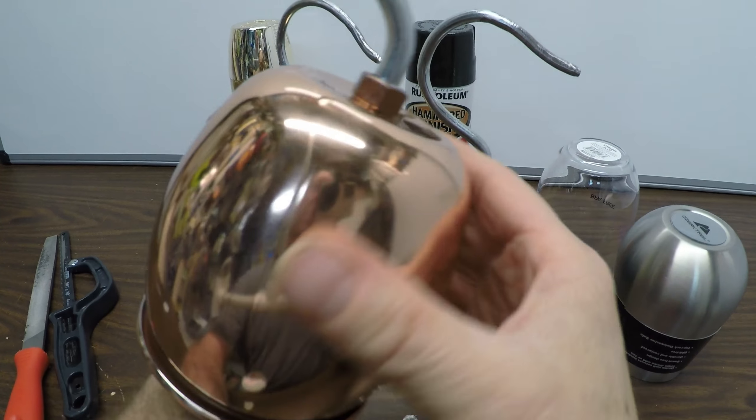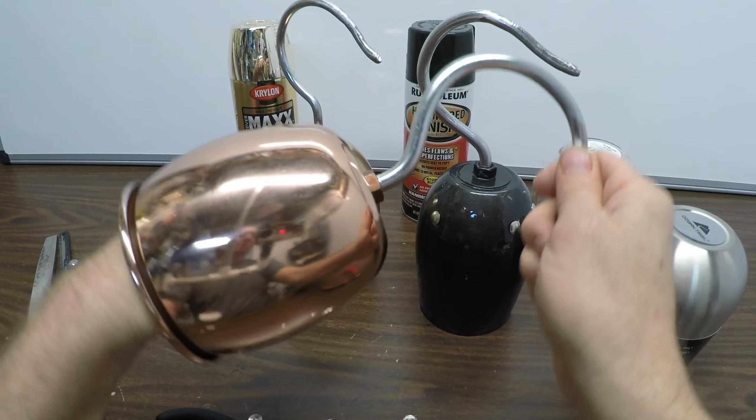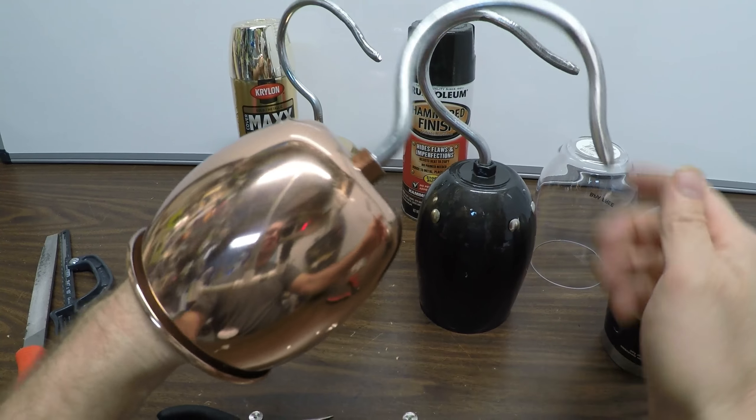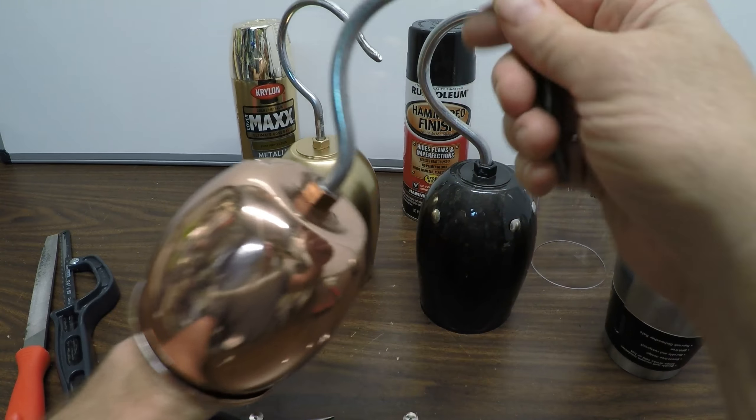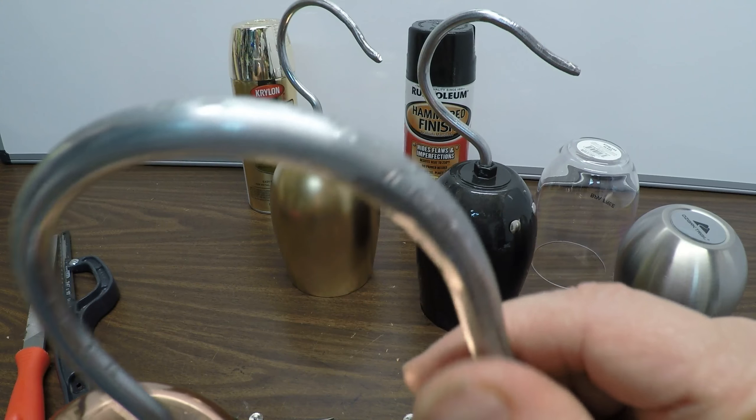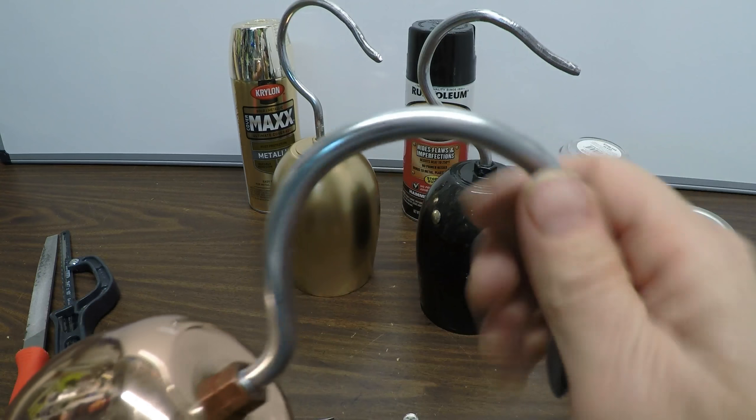This is the copper Moscow mule with the three eighth inch hook. Lots of room inside there. Just got a nice shine, you could weather this up obviously. And as you can see, the hooks are weathered. And when you're bending them, you're just kind of giving them a little nicks here and there.